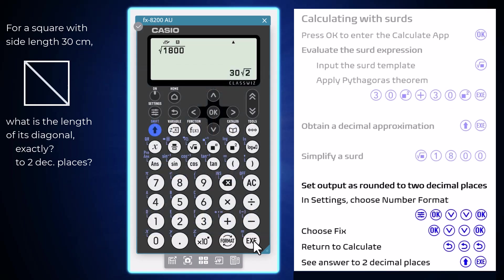If a number of calculations are being performed and answers rounded to a fixed number of decimal places are required, it can be worth setting the 8200 to provide decimal output of that form. To do so, press the settings key and from the calc settings, arrow down and open number format. Select fix by pressing OK and then arrow down to choose your number of decimal places, then press OK.